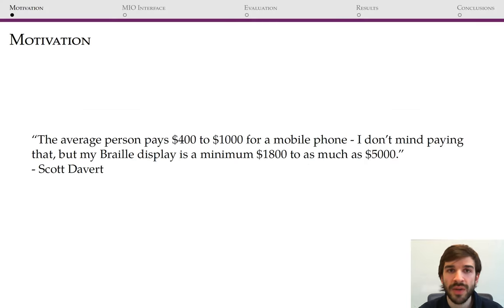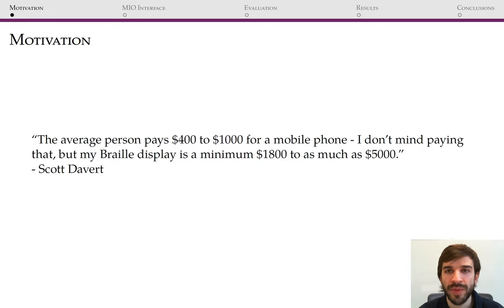High costs are a key factor restricting access to assistive devices, such as hearing aids and braille displays. Scott Davert, a deafblind professional who gave feedback on the project, explained that the average person pays $400 to $1,000 for a mobile phone, but his braille display is a minimum $1,800 to as much as $5,000.